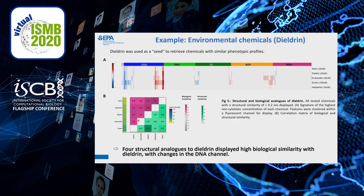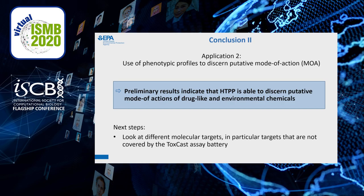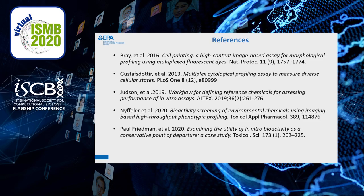Here are five organochlorine chemicals that have a similar profile to each other, and we can also show that these chemicals are structurally similar to each other. Overall, the preliminary results are promising, indicating that HTPP is able to discern putative modes of action of drug-like and environmental chemicals. This needs a little more work — we definitely want to look at different molecular targets, particularly targets not already covered by other assay streams. Here I have the references if you want to look into more detail. And if you have questions, please feel free to reach out to me.